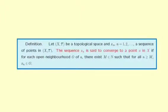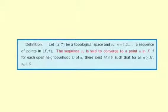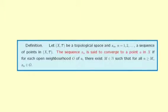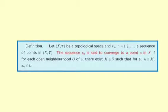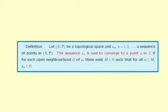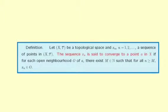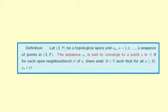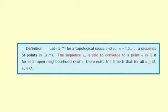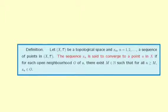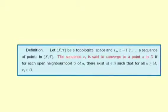First we have to explain what we mean by a convergent sequence in a general topological space. Let X_τ be a topological space and X_n a sequence of points in X. We say that the sequence X_n converges to a point A in X if for each open neighbourhood O of A there exists a positive integer M such that for any N bigger than M, X_n is in O. With a little thought we can see that this definition of convergent sequence agrees with the usual definition in a metric space and certainly in the Euclidean line ℝ.